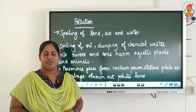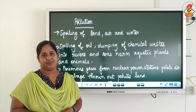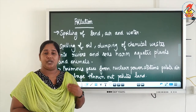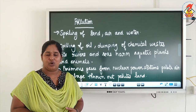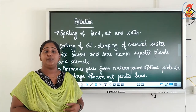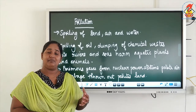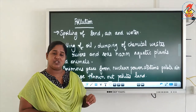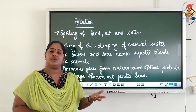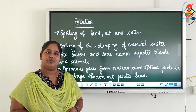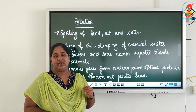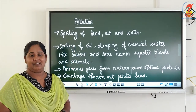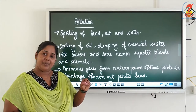Pure air is not available to us now because everywhere it is polluted. Spilling of oil when taken out from the earth, and dumping of waste water into water bodies, they all pollute the water and affect water animals. We know that drinking water is very essential — what will we do if it is not pure?